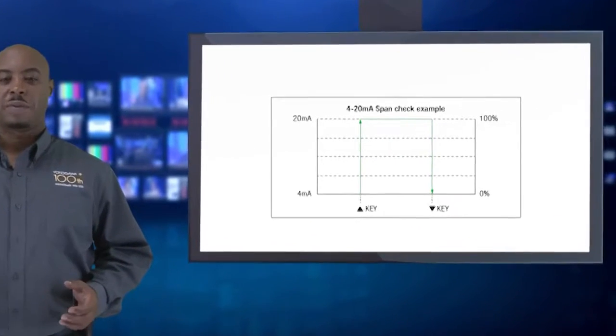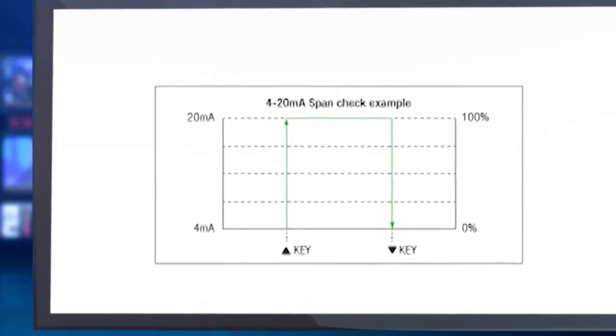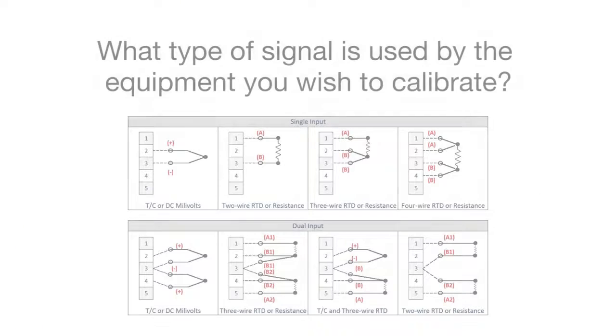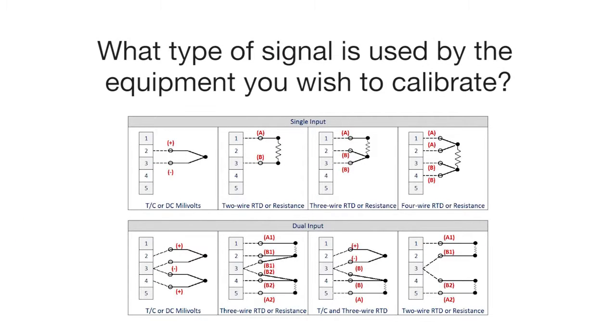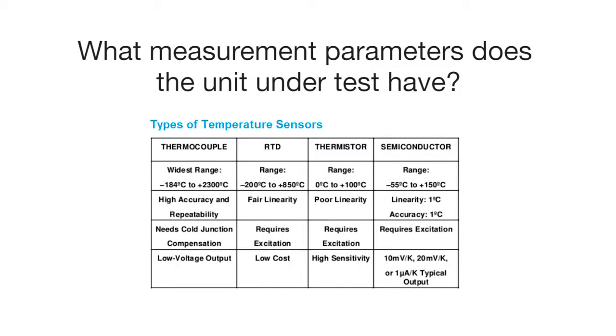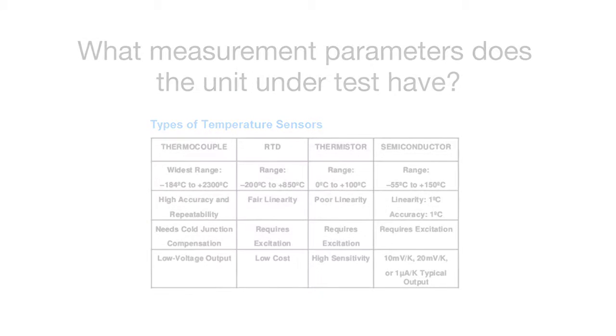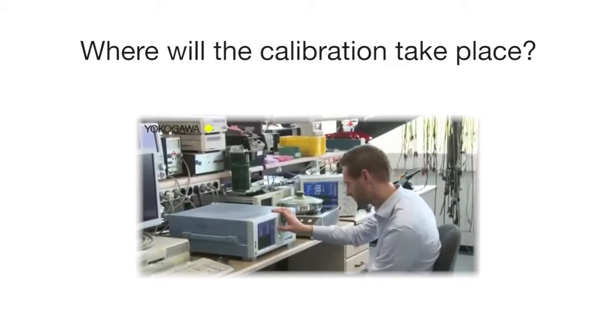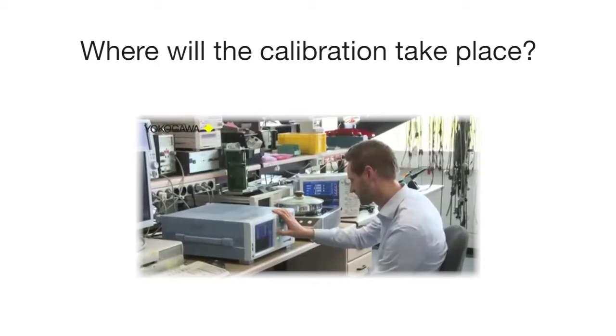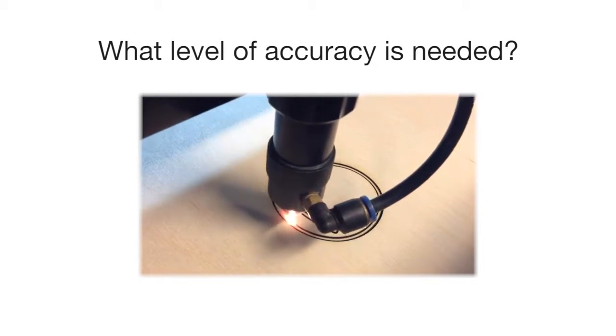There are also things to consider when selecting a calibrator, such as what type of signal is used by the equipment you wish to calibrate, what measurement parameters does the unit under test have, where will the calibration take place - in the lab or in the field, and what level of accuracy is needed.